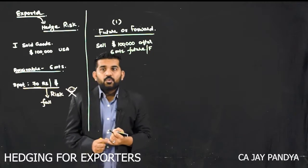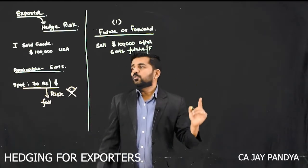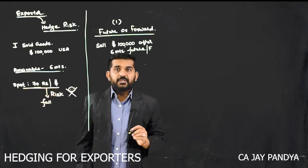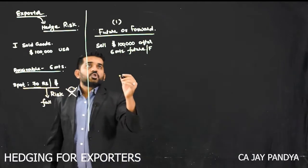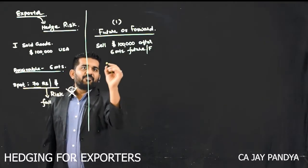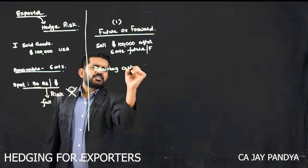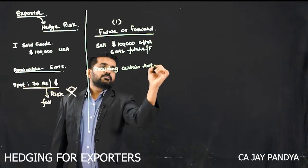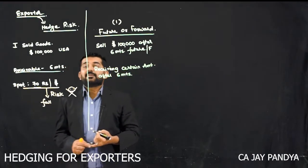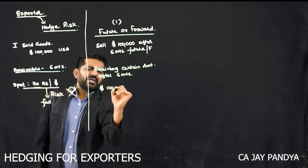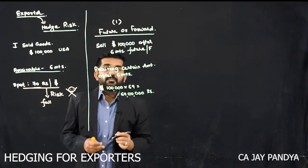So there will be an agreement between me and some other person — say it is a forward — whereby he is ready to pay me 69 rupees per dollar at the end of 6 months in exchange of $1, and I will be exchanging totally $1,00,000. So by entering into a forward or future contract, I will be receiving a certain amount after 6 months. Say the 6 months forward is available at 69 rupees, that is 69,00,000 rupees will be my certain amount.